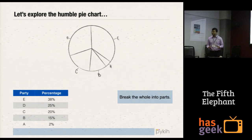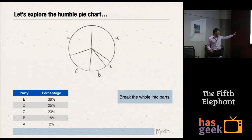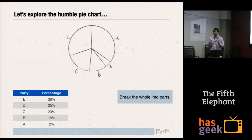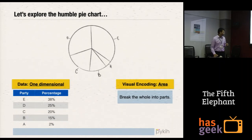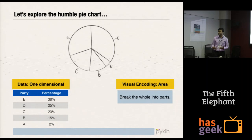Let's start with the pie chart — it's the most basic thing one can do. Here you have the data for the pie chart: E has 38% and D has 25%. The objective of a pie chart is to break a whole into parts. We call this one-dimensional data, and you're breaking a circle by the visual encoding, which is area.